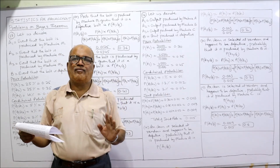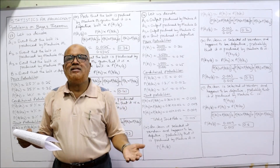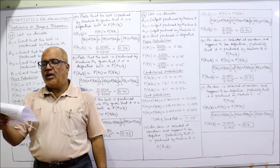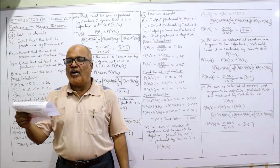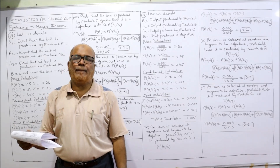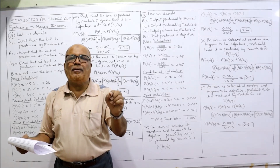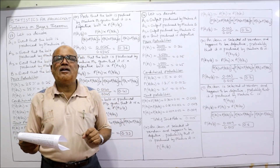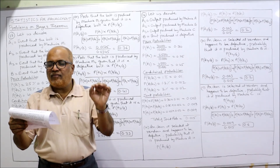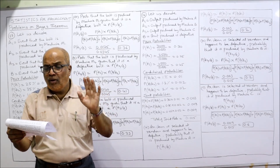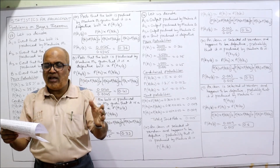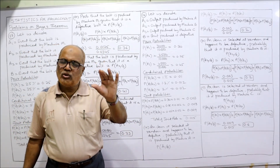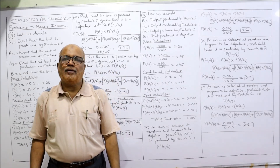Past experience shows that 1% of the output from machine A is defective. The corresponding defective fractions for B and C are 1.2% and 2% respectively. An item is drawn at random from the day's production and is found to be defective. What is the probability that it comes from the output of machine A, B, or C?